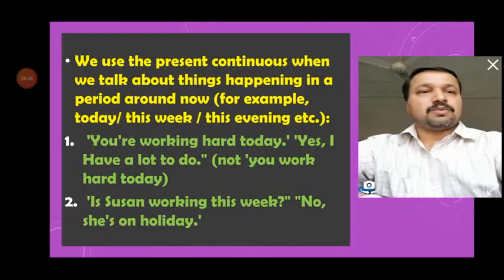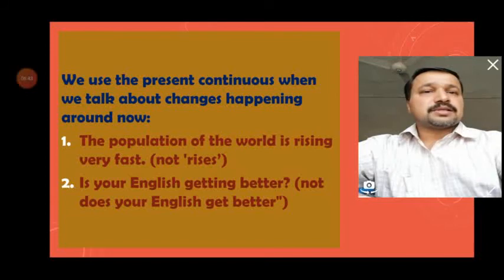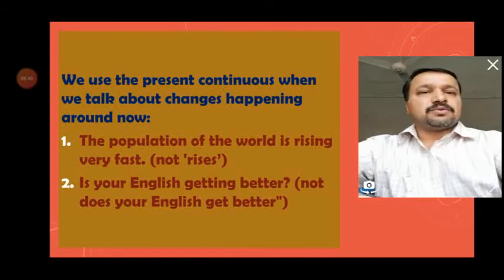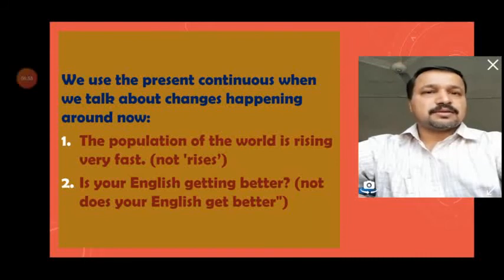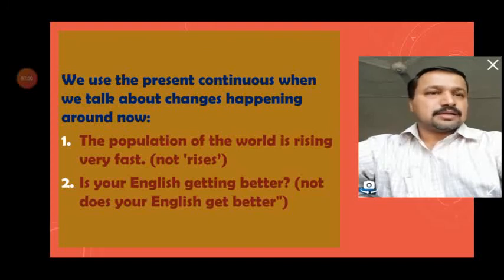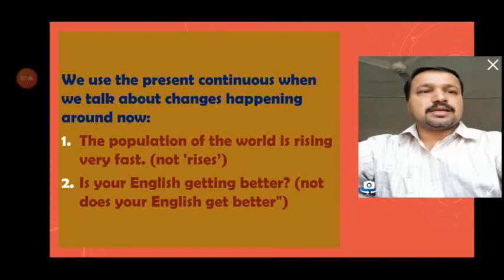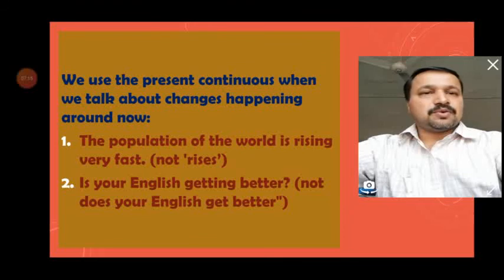Use 4 — we use present continuous for changes happening around now. 'The population of the world is rising fast' — this is stated about the present scenario even though it's not happening right in front of your eyes. 'Is your English getting better?' — this doesn't happen within a moment or a week; it takes time. The question is about whether at present you are doing something to improve your English.